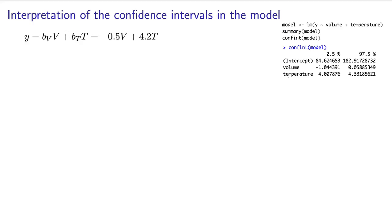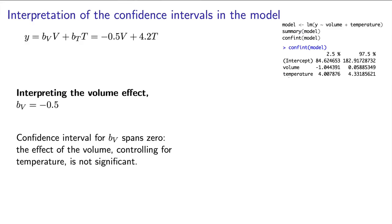Let's say for a moment that when we calculate the confidence interval for the bv coefficient of minus 0.5, we find that it spans 0. Then we should say, if we were writing this in a message to our colleagues, that the effect of volume controlling for temperature is not significant.